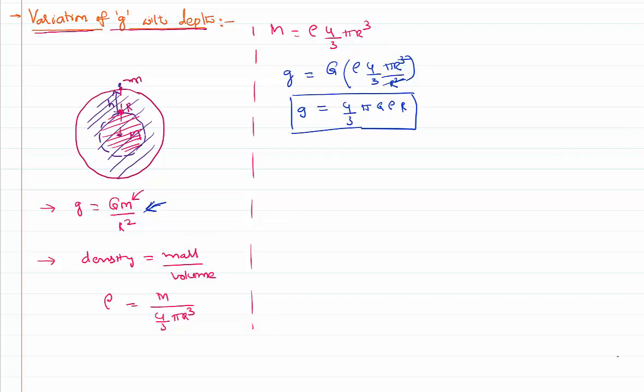I cannot use this relation because M is variable. So that implies gravity on the surface of the earth is 4 by 3 pi G rho r. When you say h from the surface, distance from the center for the new position of the particle will become automatically r minus h. This distance becomes r minus h.